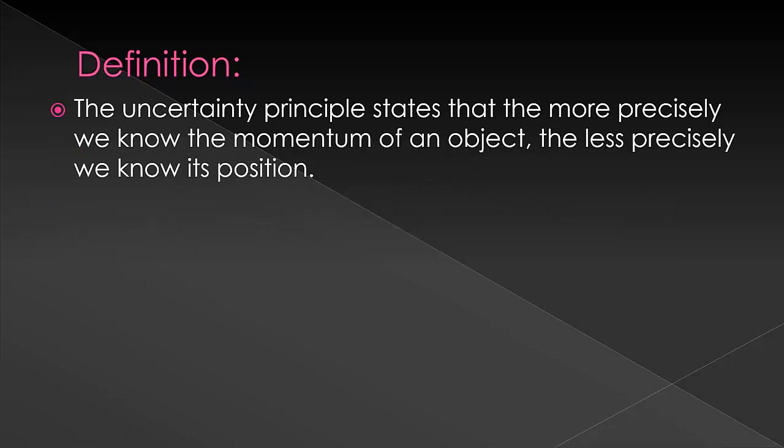Let's first define the principle. The Uncertainty Principle states that the more precisely we know the momentum of an object, the less precisely we know its position, and vice versa.